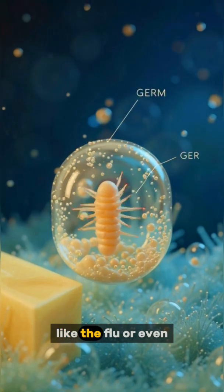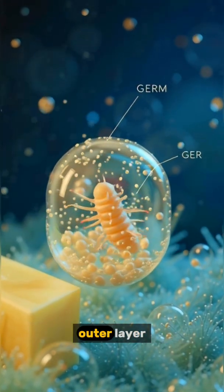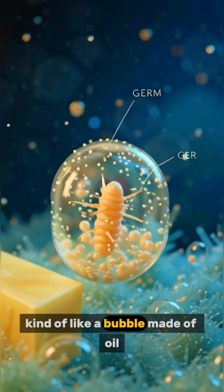Germs and viruses, like the flu or even COVID-19, are surrounded by a fatty outer layer, kind of like a bubble made of oil.